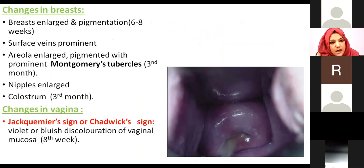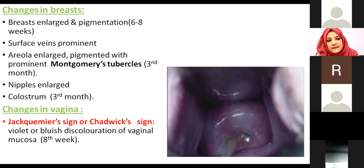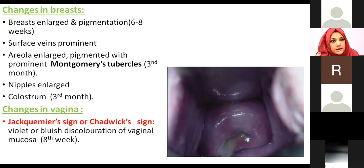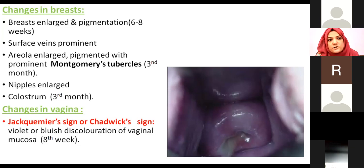The breasts may be enlarged, and there is hyperpigmentation surrounding the areola around six to eight weeks. There is enlargement of the sebaceous glands surrounding the areola, known as Montgomery's tubercles, appearing from the third month onwards. From the third month onwards, there is also production of colostrum — a yellowish secretion that provides nutrition to the child and contains antibodies.